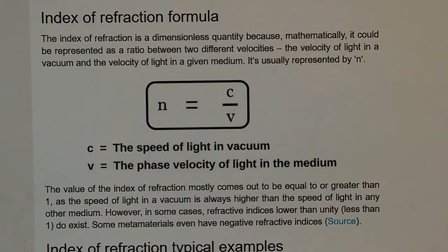First, we need to talk about the index of refraction. Light travels at the speed of light in a vacuum, and that is typically symbolized by the letter C.